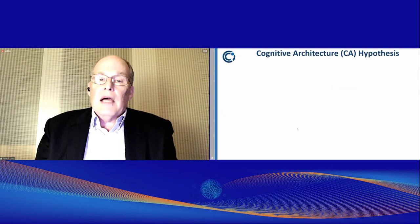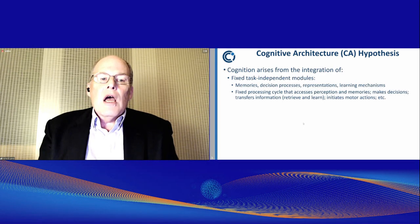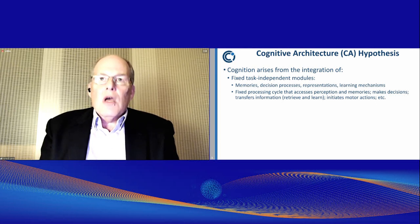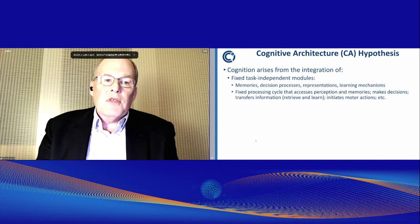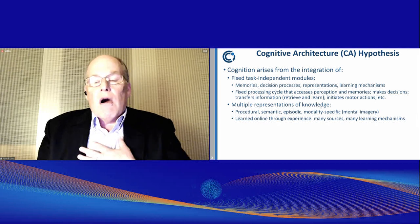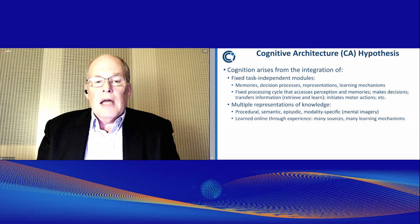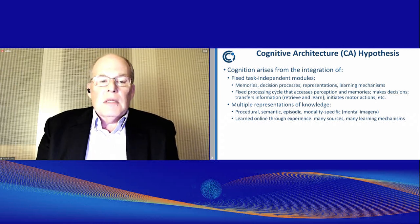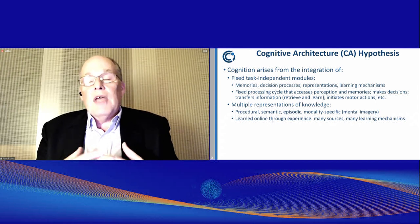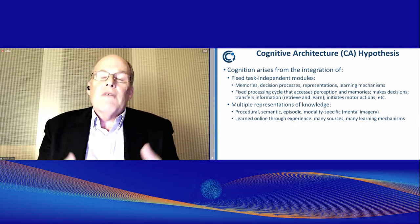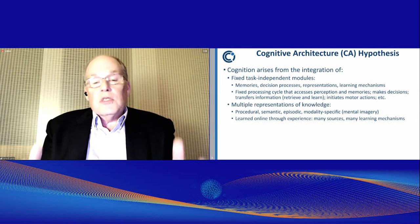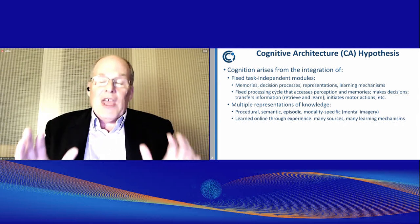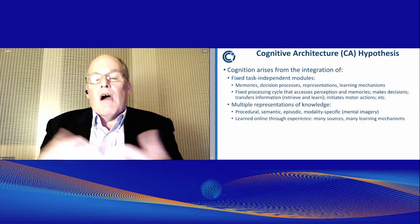The approach I've taken is based on the cognitive architecture hypothesis, developed in part by Newell, Simon, and John Anderson, which is that cognition arises from the integration of a fixed set of task-independent modules — things like learning mechanisms, memories, and decision processes. These are not task-specific but are what hold knowledge. There are multiple representations and multiple types of knowledge: procedural, semantic, episodic, and modality-specific knowledge such as mental imagery. All this knowledge can be learned online through experience. Sometimes we want to take advantage of large bodies of knowledge that already exist so that our agents don't have to learn everything from scratch.